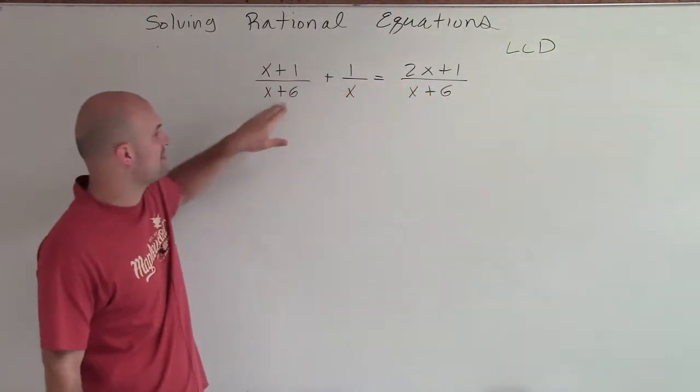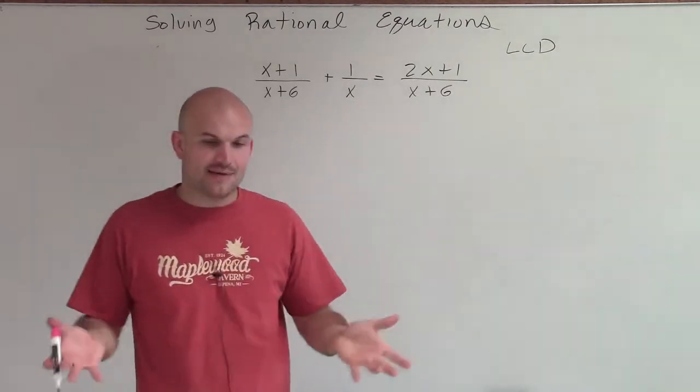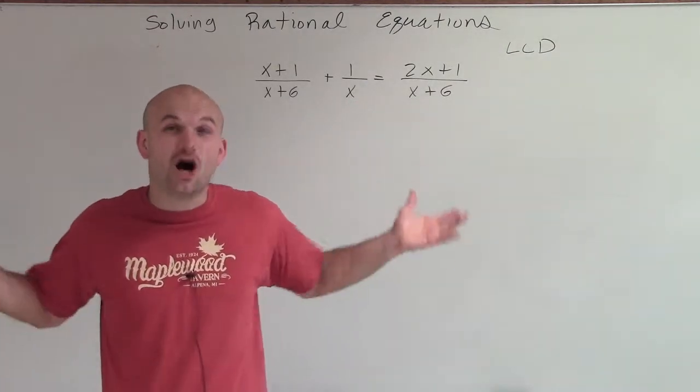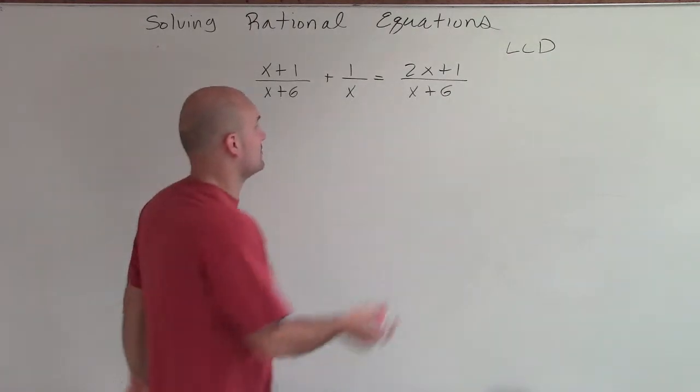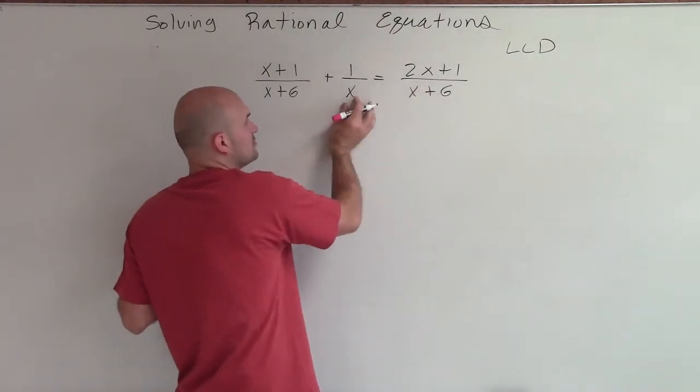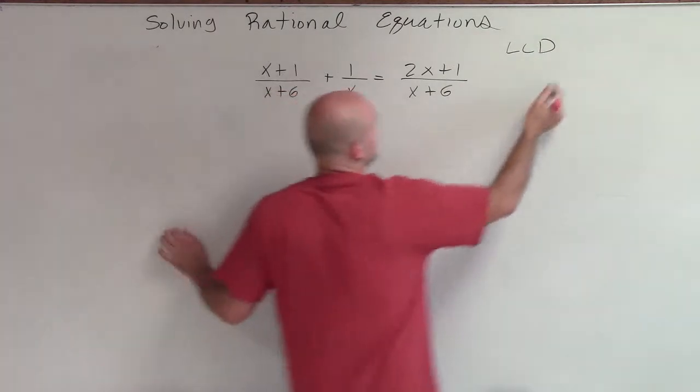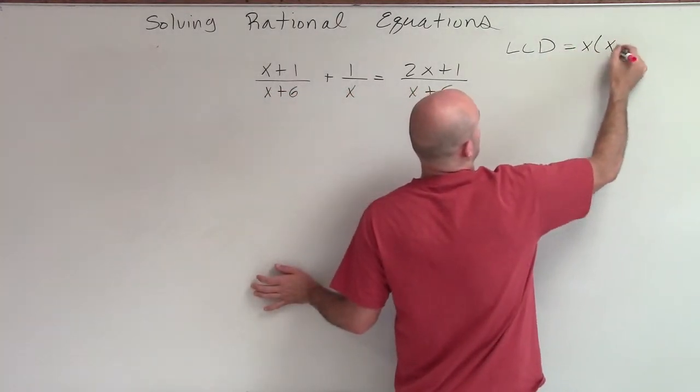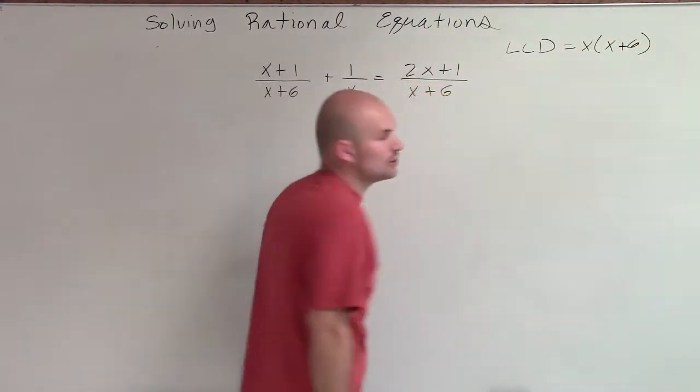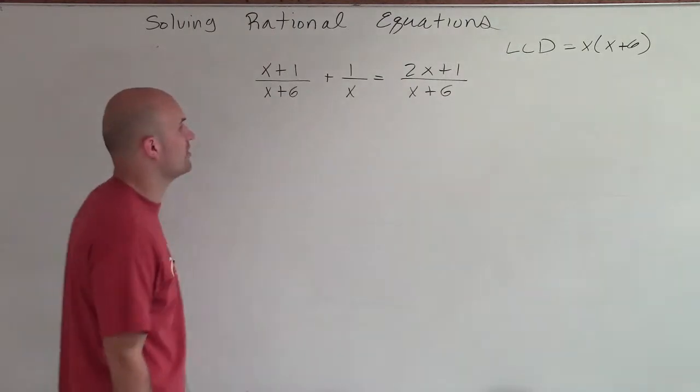So we look at each one of these denominators and say, what is the smallest denominator or smallest multiple that all of these denominators will divide into? Since they share an x plus 6, but they don't share, only one of them has an x, we know our LCD is going to be x times x plus 6. We don't need to include the x plus 6 twice, only one time.